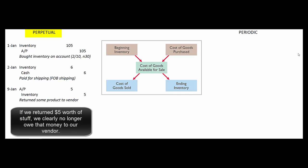Then let's pretend like we're dissatisfied with some of the inventory. So we ship back $5. We reduce our accounts payable and we directly reduce our inventory account to reflect the fact that we've returned $5 worth of stuff.